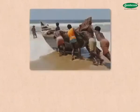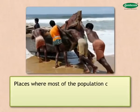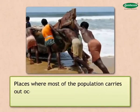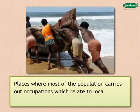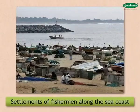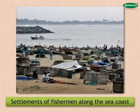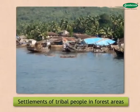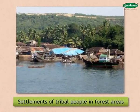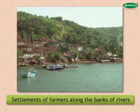Rural settlements are places where most of the population carries out occupations which relate to local natural resources. Examples include settlements of fishermen along the sea coast, settlements of tribal people in forest areas, and settlements of farmers along the banks of rivers.